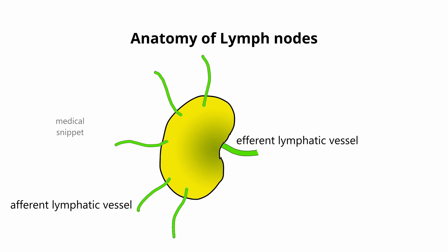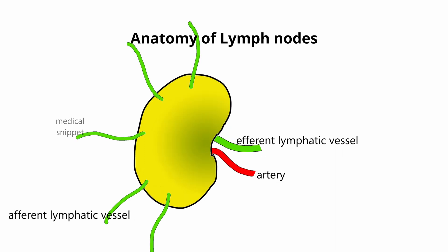Lymph node has an arterial supply which enters via the hilum. Within the lymph nodes, the artery divides into capillaries, then the capillaries drain into venules, then venules drain into a vein.